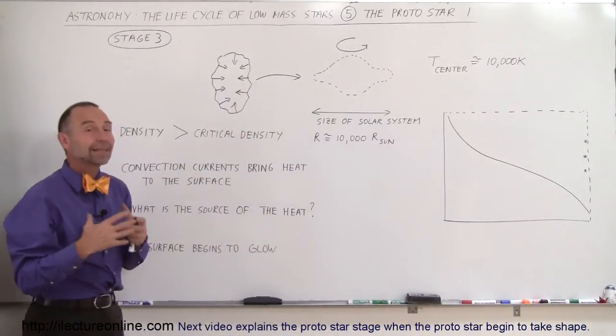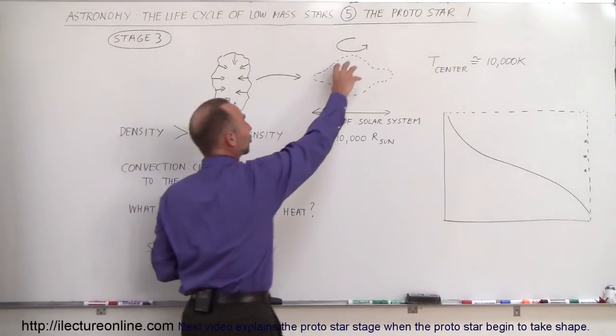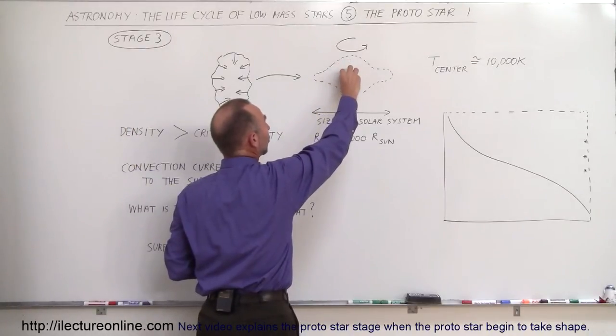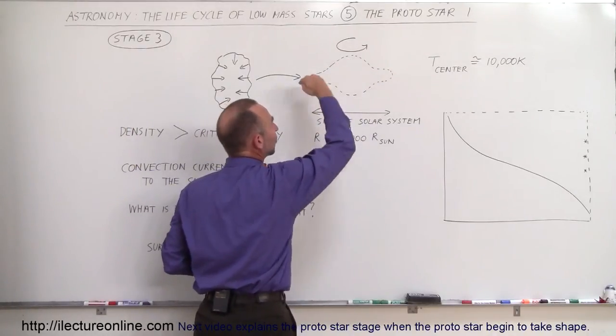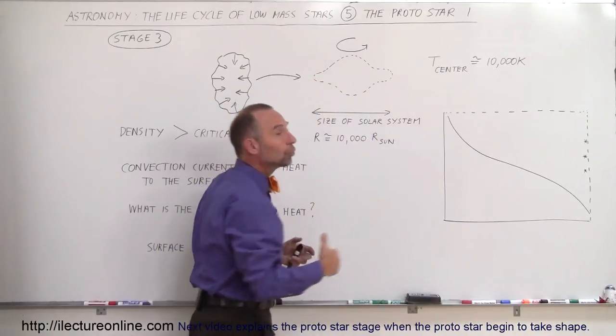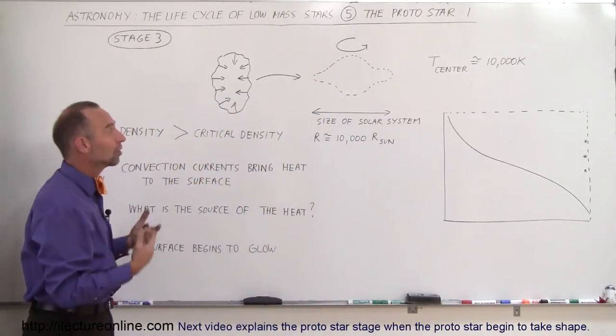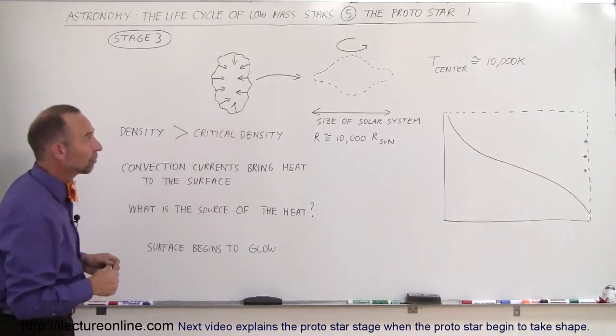The protostar is beginning to take shape. The center portion will eventually collapse into the star and the other regions will eventually become the disk of the solar system, producing the planets, moons, comets, asteroids, and so forth.